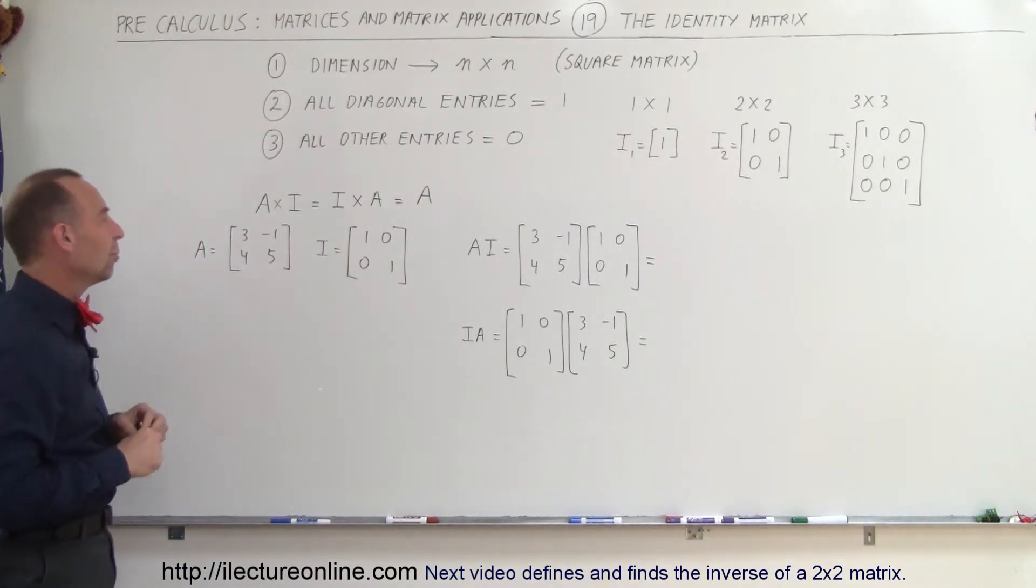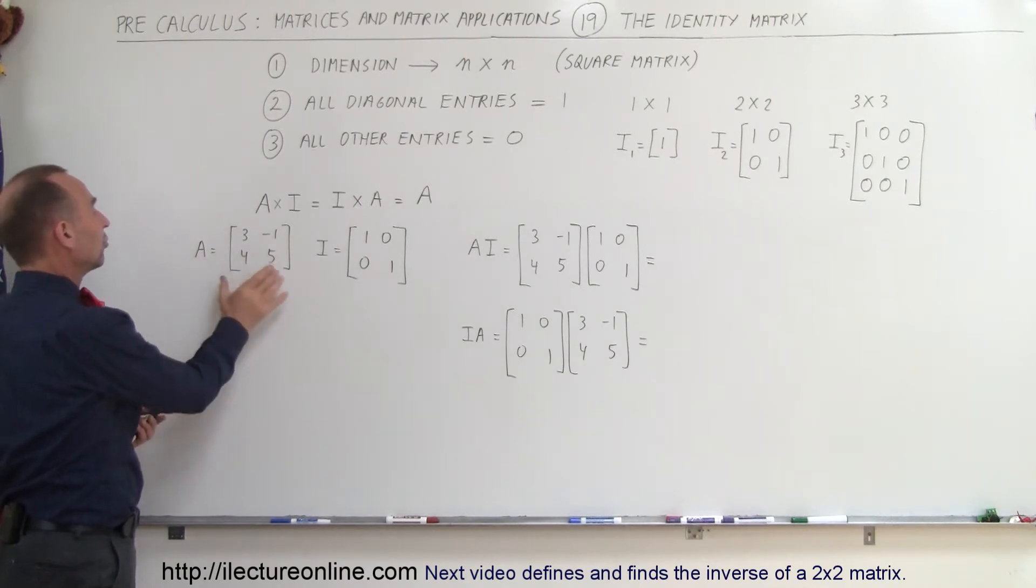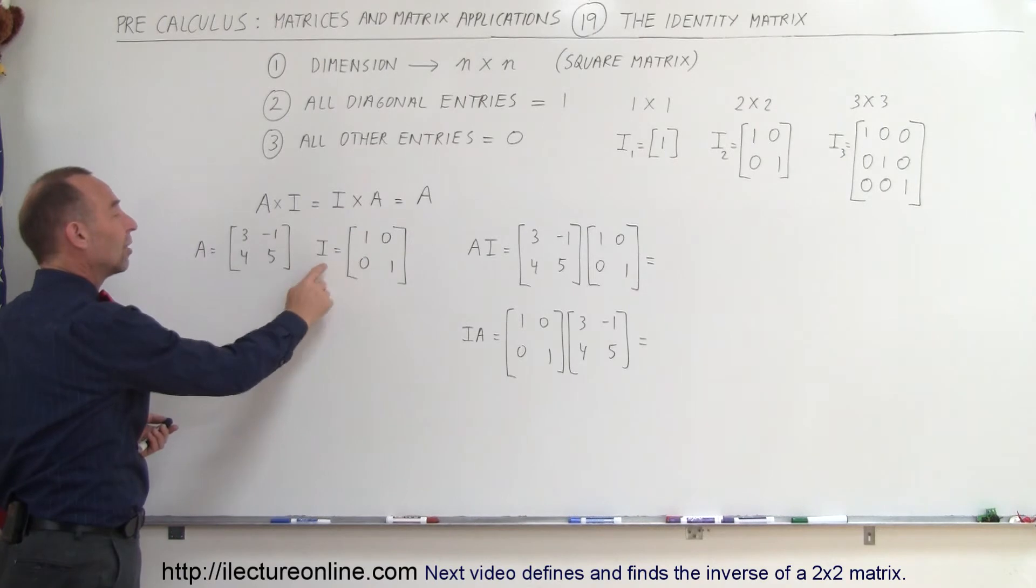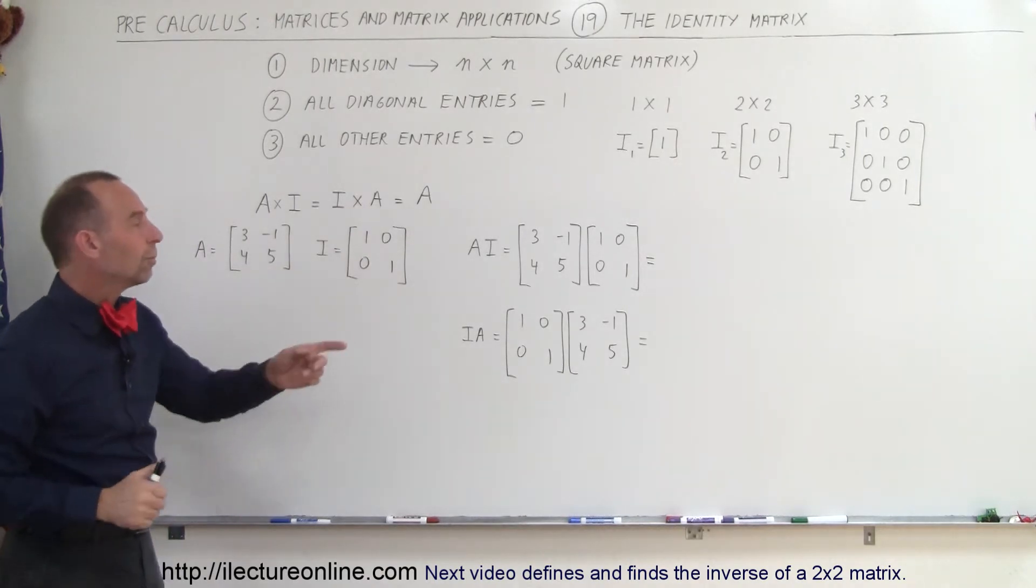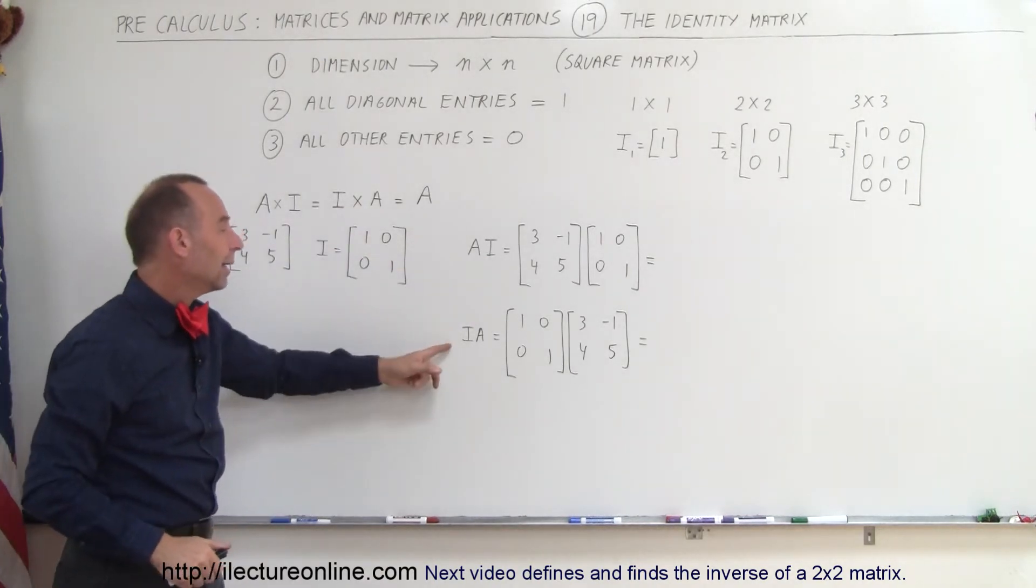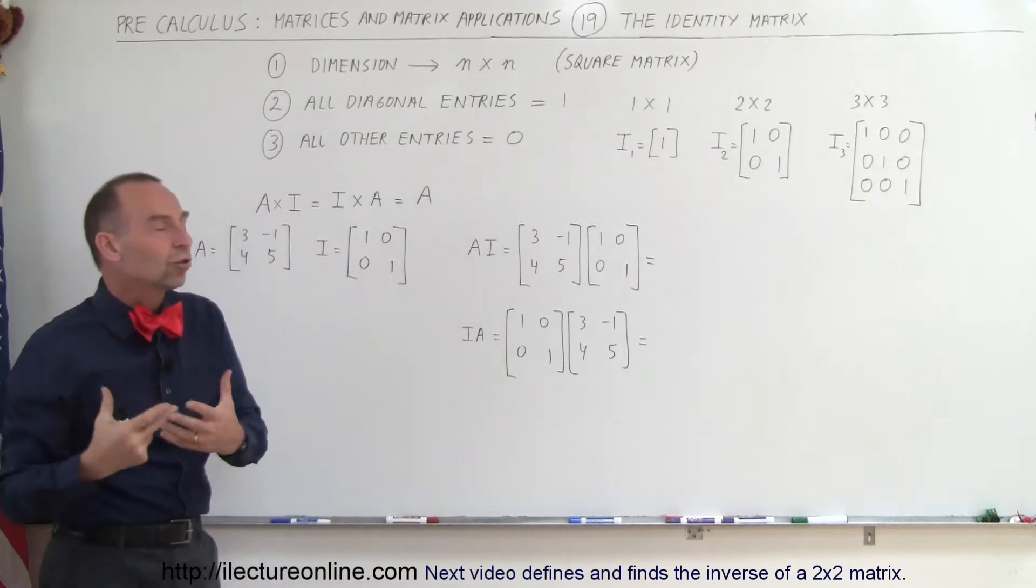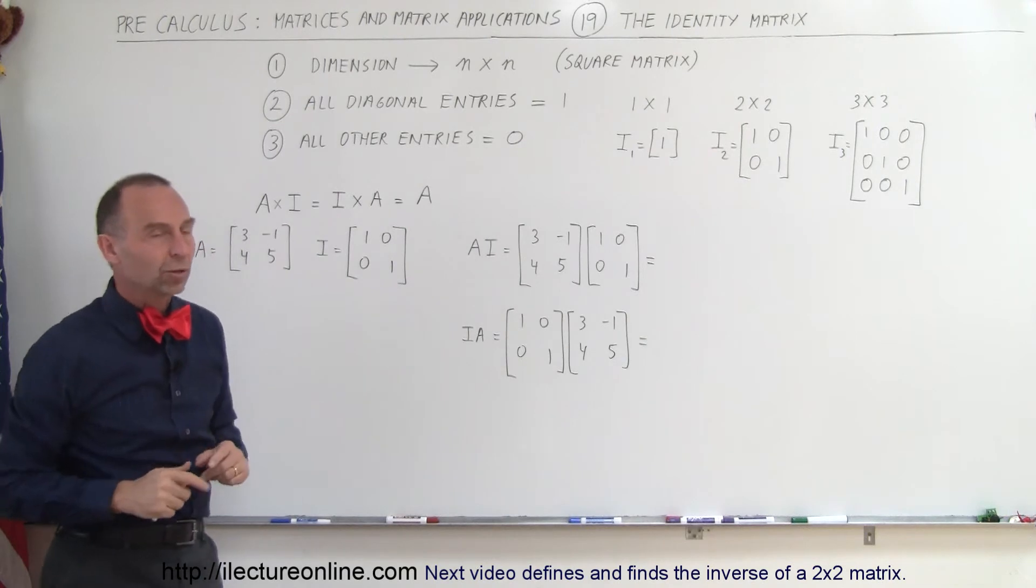And we'll show that in just a moment. So, let's say we have matrix A, which looks like this, and the identity matrix, a 2x2 identity matrix, that looks like this. So, let's multiply A times I and I times A. Quite often, they don't put the multiplication sign in between, and it's to be understood that those two matrices are multiplied.